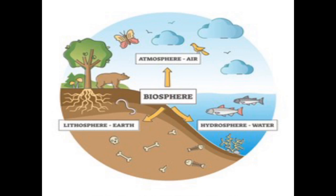The sun is the cause of many natural processes on the Earth. We get heat and light from the sun. Water, land, and air constitute the envelopes of the Earth — namely the hydrosphere, lithosphere, and the atmosphere. The three spheres of the Earth are collectively known as the biosphere.